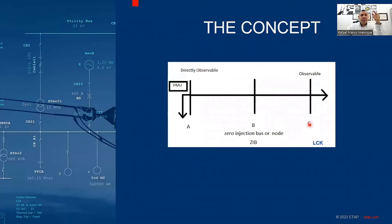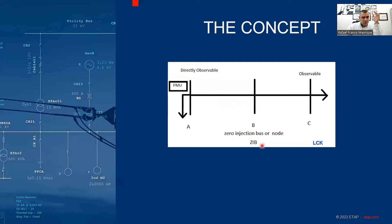Another important concept is the Zero Injection Bus (ZIB). In the picture you can see three nodes: A, B, and C. At node A, a PMU is installed, which makes that bus directly observable. Node C is a Zero Injection Bus, meaning there is no load or generator connected to it. As a consequence, bus C also becomes observable.